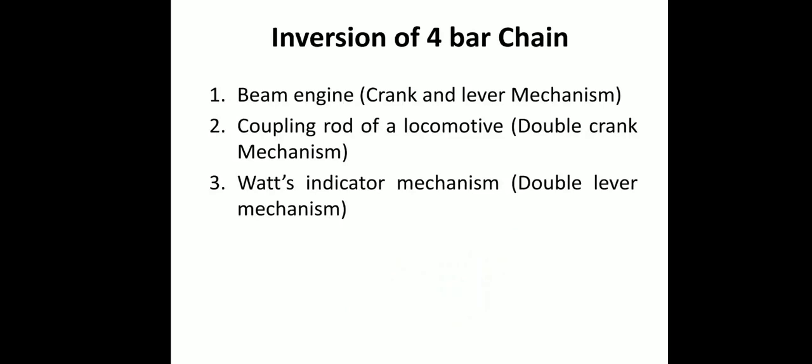We are now discussing inversions of the four bar chain. We have already discussed how four bar chain inversions are done — that is, by fixing any one of the links. We will get three different mechanisms from the fixation. The first one is beam engine, also known as crank and lever mechanism. The second is coupling rod for a locomotive, also known as double crank mechanism. The third is Watt indicator mechanism or double lever mechanism.